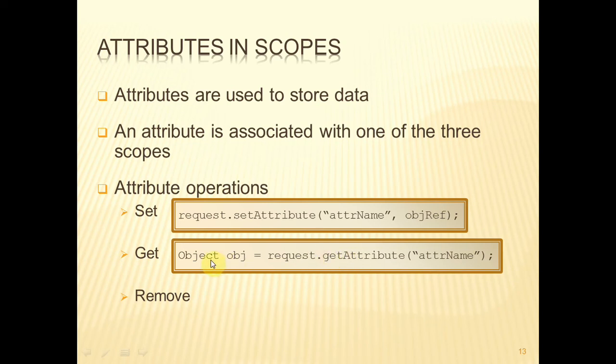because the Object class sits at the top of all the inheritance hierarchies within Java. Therefore, this reference, obj, can refer to absolutely any type of object. And so that's how getAttribute returns the reference.